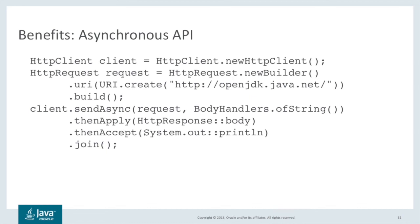The HTTP client supports an asynchronous mode of operation. Requests sent with the sendAsync method return a CompletableFuture of HTTP response. CompletableFuture provides a number of methods for building chains of dependent actions — functions that can be run either synchronously or asynchronously. In this example, sendAsync is given the request to be sent and also a body handler that converts the response body bytes to a string. The thenApply method maps the HTTP response to its body type, which in this case is a string. The thenAccept method consumes the string and prints it out. Finally, the join method blocks until the response string is printed.